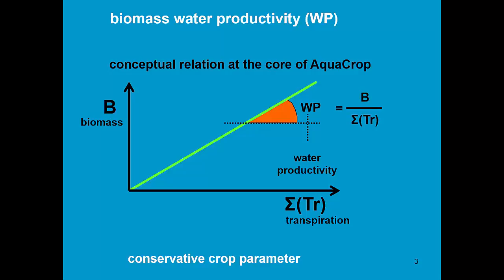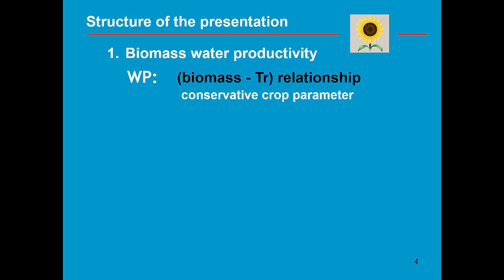It expresses the amount of biomass produced per unit of water lost by transpiration. So it is the biomass water productivity. It gives the relationship between biomass and transpiration.